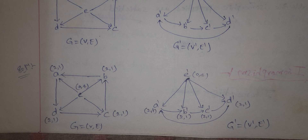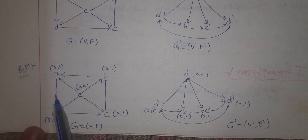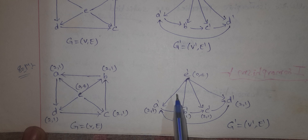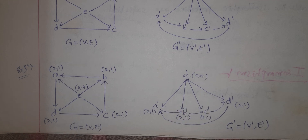Next, we check the edges. Graph G has edges: 1, 2, 3, 4, 5, 6, 7, 8. Graph G dash also has edges: 1, 2, 3, 4, 5, 6, 7, 8. The edges are also equal — condition two is satisfied.